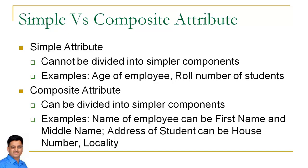Yaani jisko further divide nahin kar sakte, hum usko simple attribute bolte hai. For example, age of employee — 38, 42 — cannot be further broken into parts. So age is a simple attribute. Roll number of student is also a simple attribute.